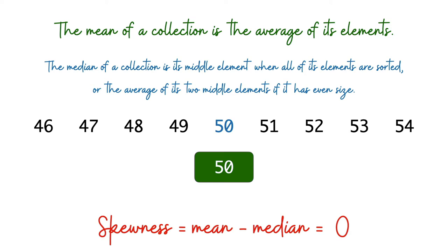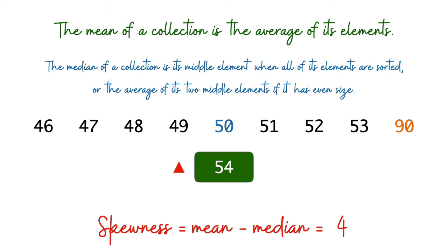Let's see if we can introduce some skewness by playing around with the numbers. If we take the smallest number and make it even smaller, the mean goes down but the median remains the same, so skewness decreases. On the other hand, if we take the largest number and make it even larger, this increases the mean without touching the median, so skewness increases. Feel free to pause and work out your own small examples to get comfortable with the definition.